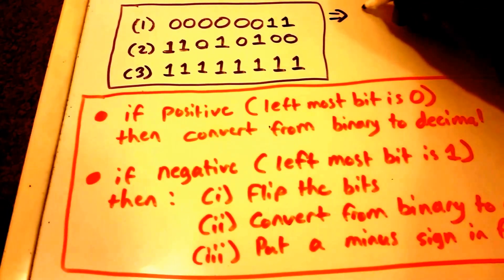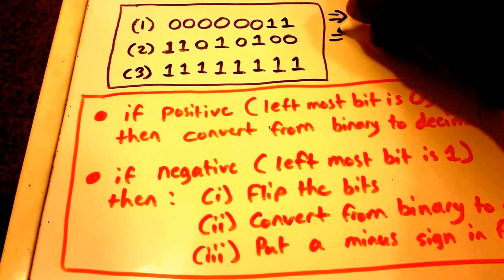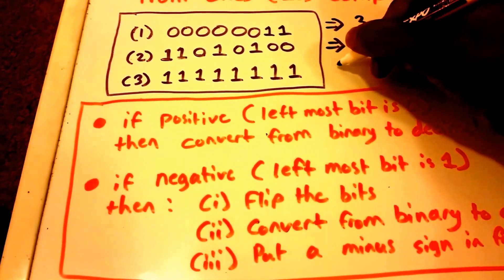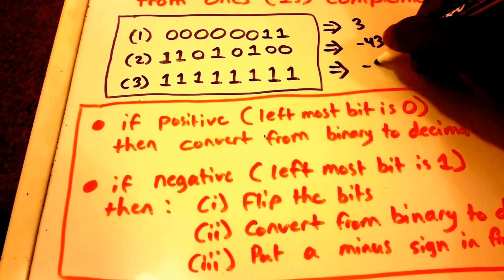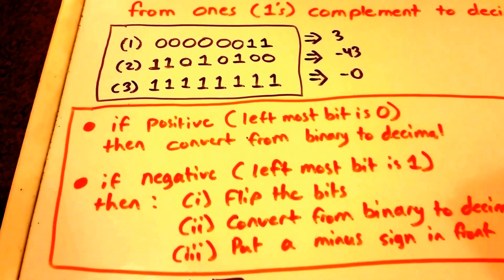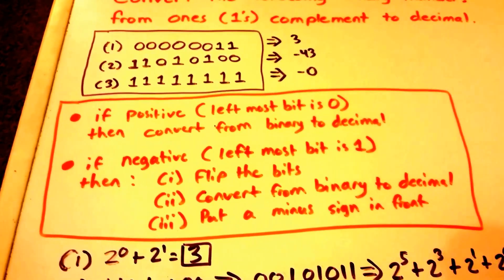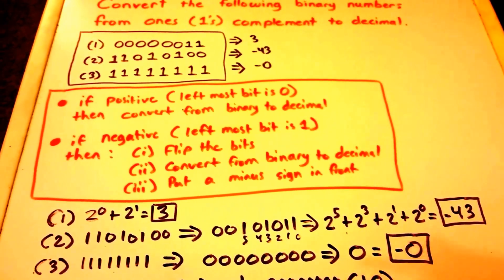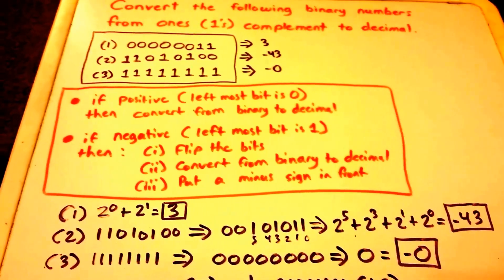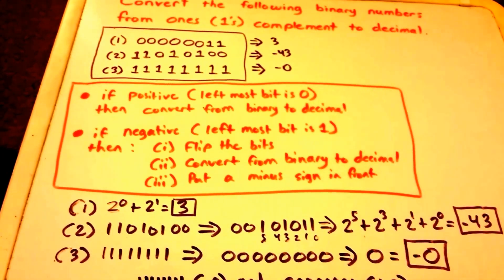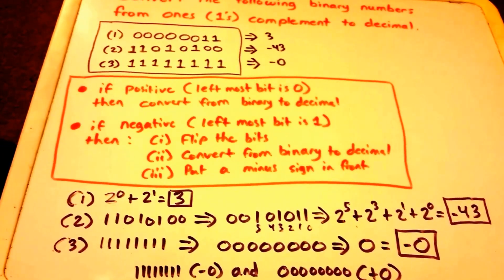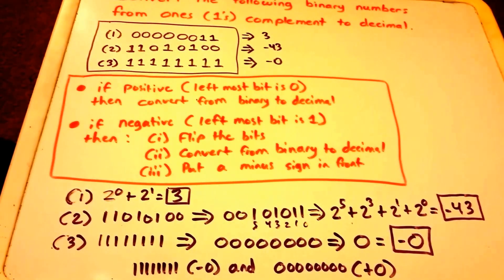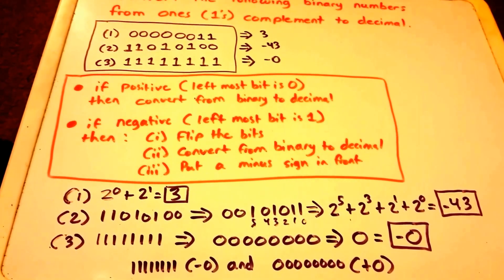So the answers are: the first number equals three, the second equals negative 43, and the third equals negative zero. Thanks for watching — please leave any questions or comments, let me know if I made any mistakes, don't forget to subscribe, and I'll see you all in the next video.